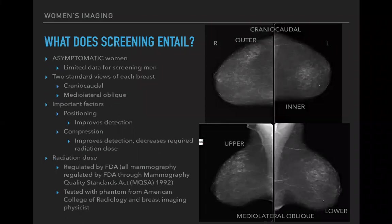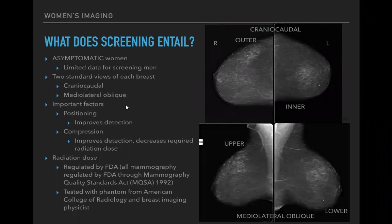Breast cancer screening is performed on asymptomatic women — if someone has a complaint, it becomes a diagnostic examination. Most centers are currently only screening women. We do two standard mammographic views of each breast: craniocaudal and mediolateral oblique. For craniocaudal, the breast is compressed between the paddle and detector from above and below. For mediolateral oblique, the breast is compressed at a 45-degree angle toward the axilla with the beam coming from medial to lateral.